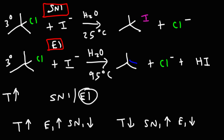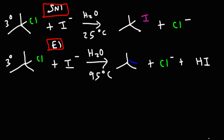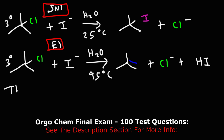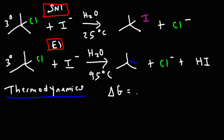With that being said, why does an increase in temperature favor the E1 reaction over the SN1 reaction? Why do high temperatures favor elimination over substitution? Well, there are two big reasons. The first one has to do with thermodynamics. Perhaps you recall the equation: delta G, Gibbs free energy, is equal to delta H, the enthalpy, minus T delta S, the change in entropy.